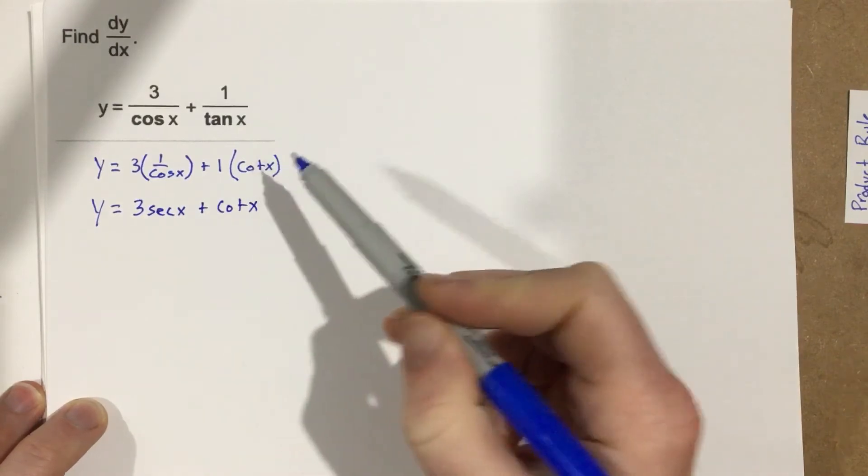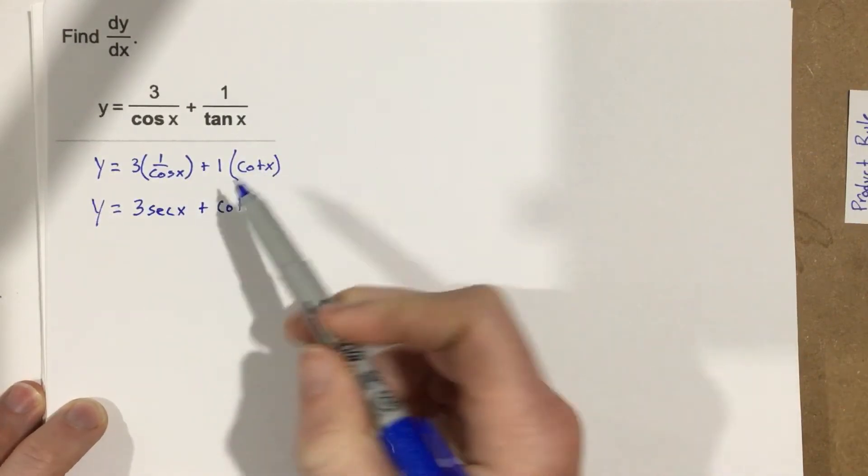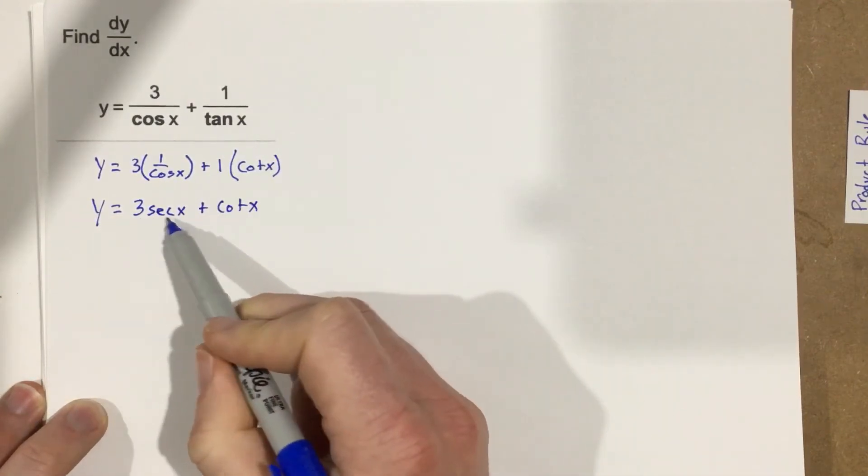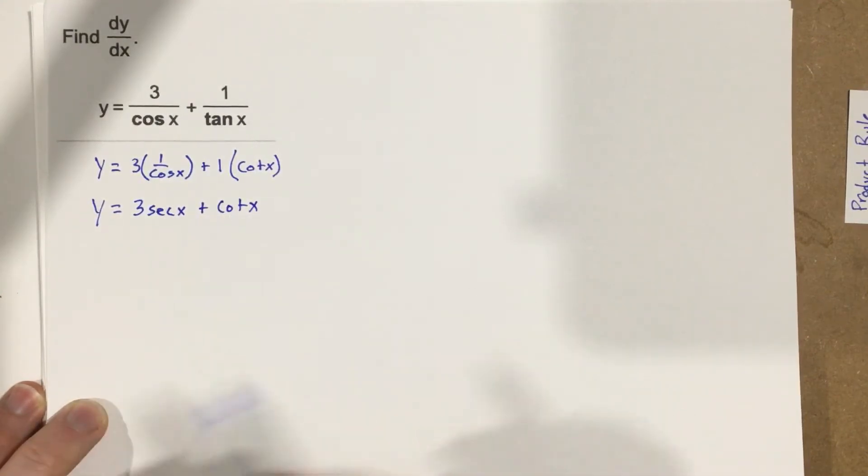So, before we've done any calculus, we've just rearranged the trig functions using trig identities to get them to be a different function so that we can do this derivative pretty easily.